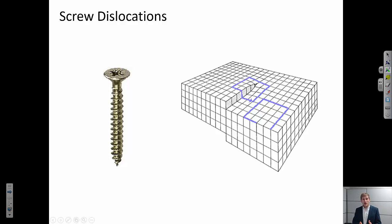Edge dislocations occur when you have an extra half a plane of atoms in the lattice. Screw dislocation is very different. Instead of having an extra half a plane, the lattice itself is sheared so part of that lattice is offset by a bit relative to the other part of the lattice.